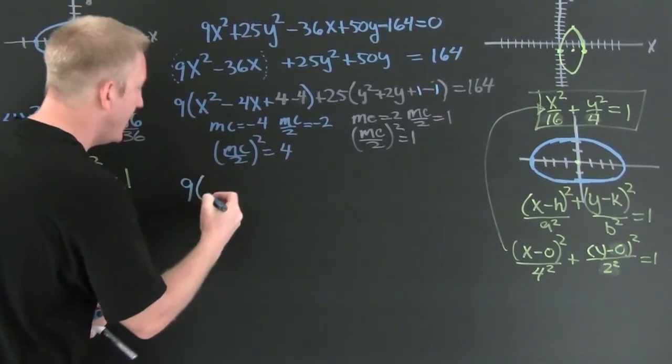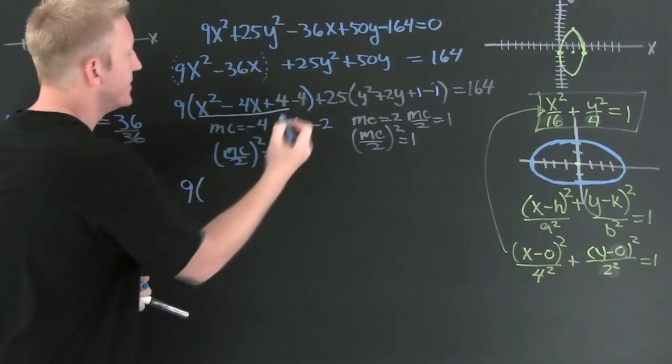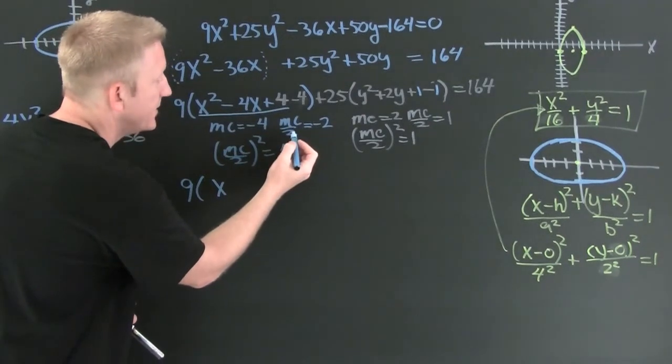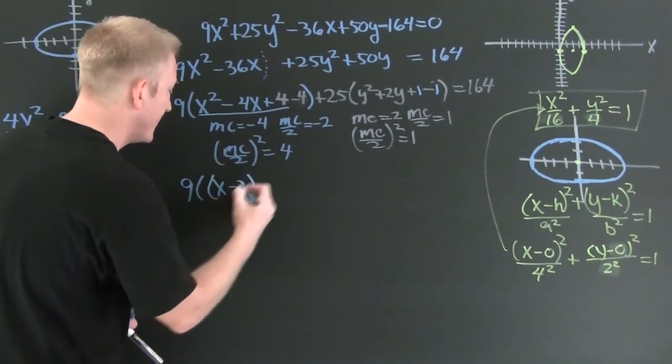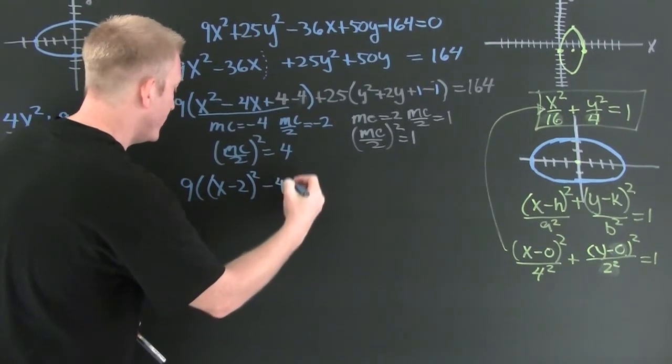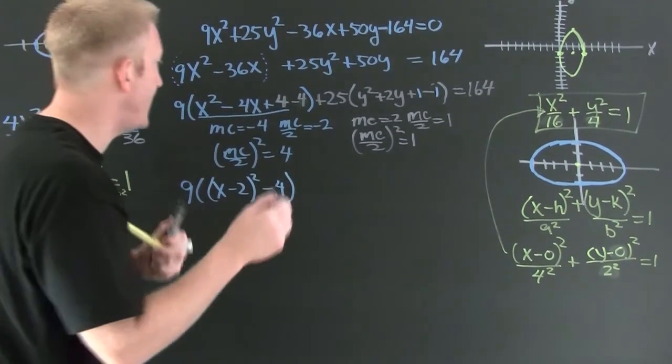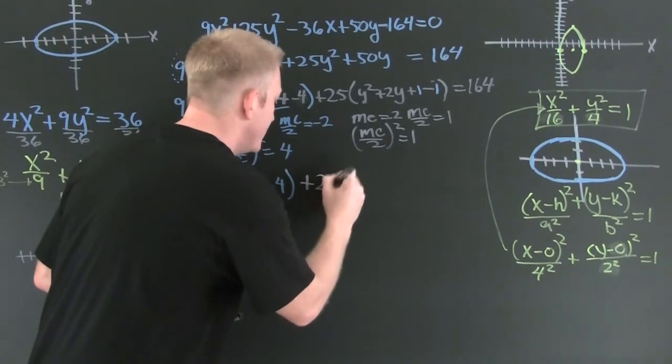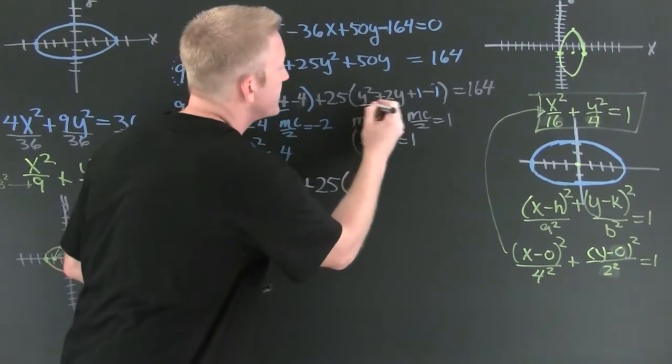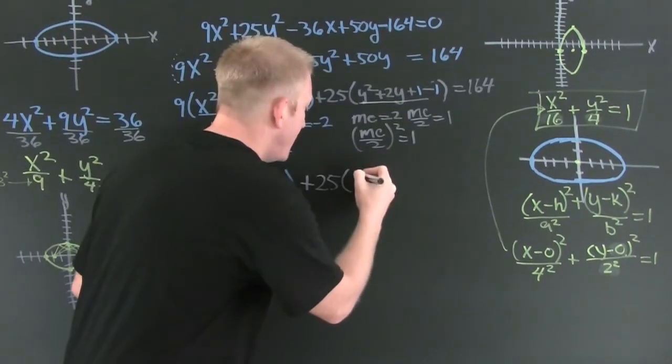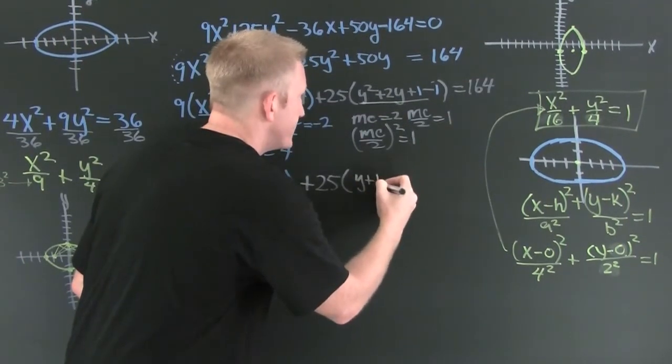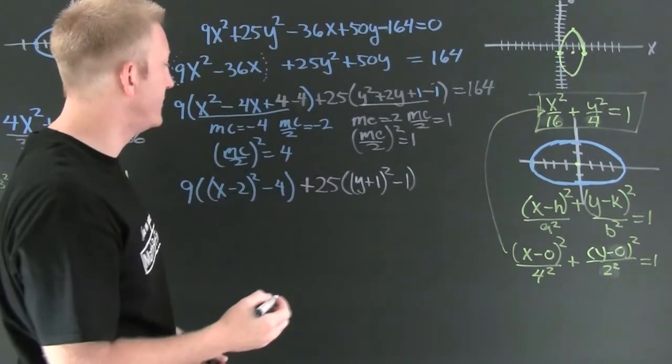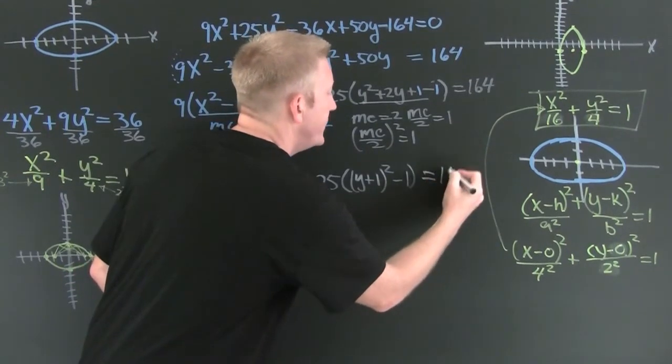So I'm gonna have 9 times complete this square every single time. It's x and the middle coefficient over 2 squared. And then I still have that minus 4 sitting out there. Plus 25 times complete this square every single time. It's y and the middle coefficient over 2 squared. And then I still have that minus 1. Very nice. And that's still equal to 164.